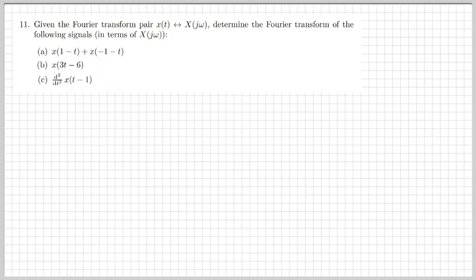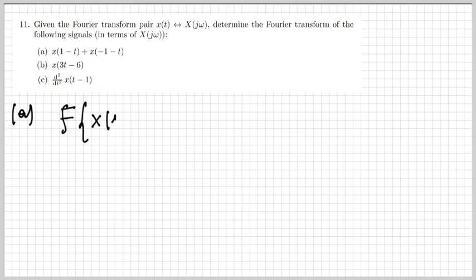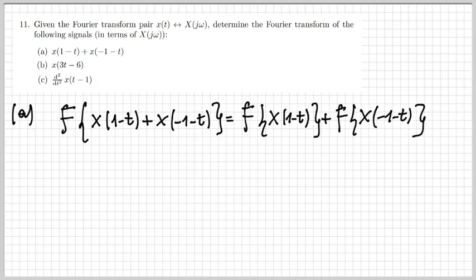The next exercise is about determining the Fourier transform of certain signals and expressing it as the Fourier transform of some original signal x of t. Let's start with part a: the signal we have is x of 1 minus t plus x of minus 1 minus t. We want to represent its Fourier transform in terms of the Fourier transform of x of t. I just apply linearity to split it up into two calculations.